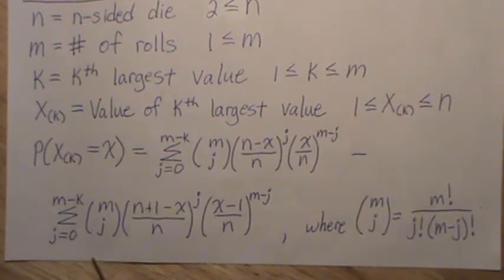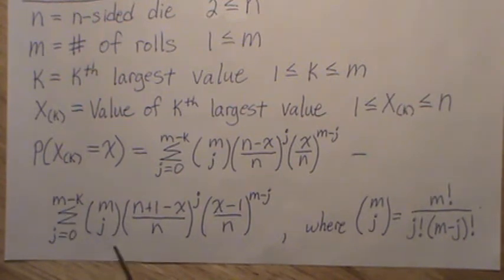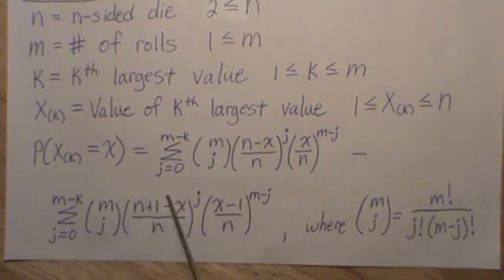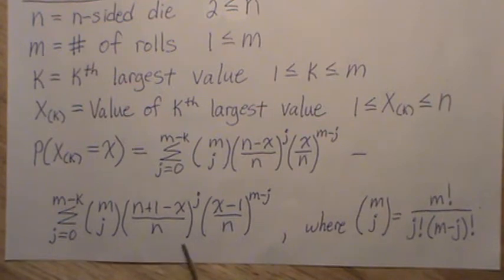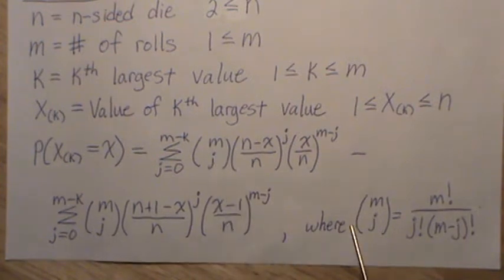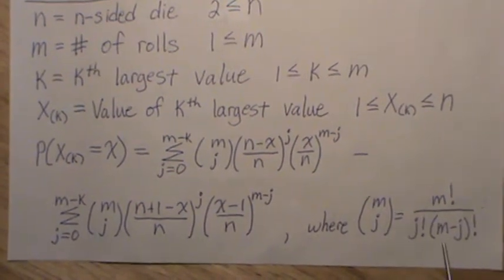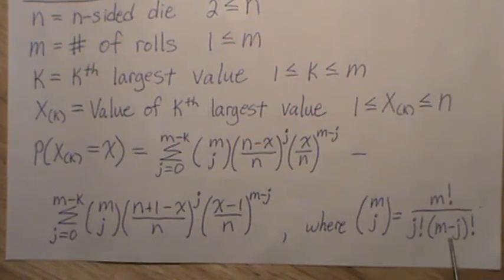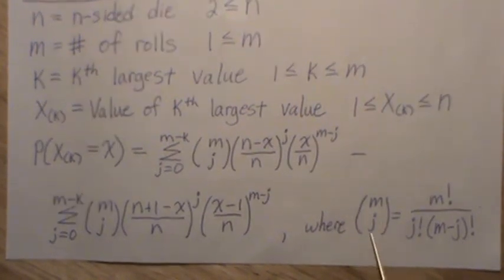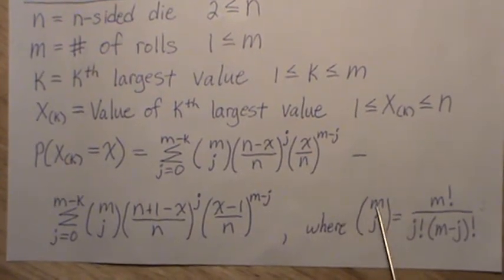minus this sum. It goes from 0 to m minus k, m choose j, (n+1-x)/n, (x-1)/n to the m minus j. Where this binomial coefficient is m factorial divided by j factorial, divided by m minus j factorial. That's what's called a binomial coefficient, common combinations, m choose j.